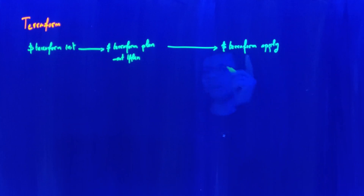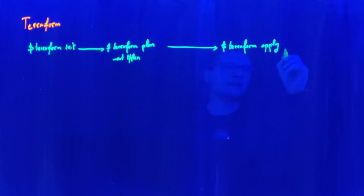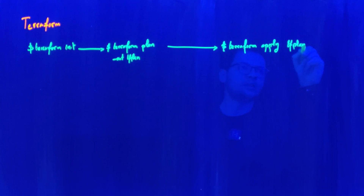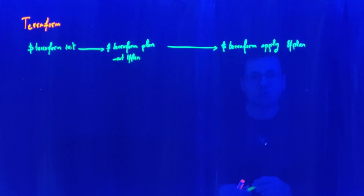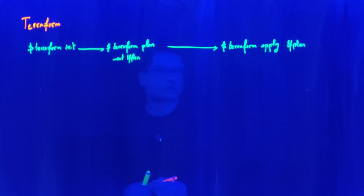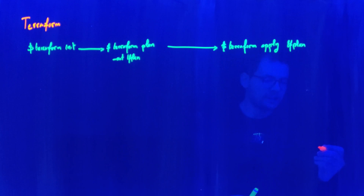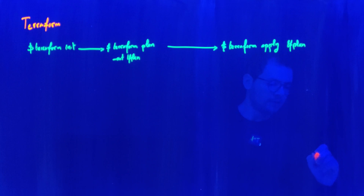At the end, we apply that configuration using another command, which is Terraform apply. For Terraform apply, we can pass that tf plan file that we have generated, which contains the changes that should be pushed into our environment. So in this case, for example, I want to deploy to a cloud provider — let's say Azure.